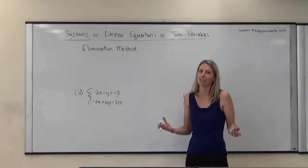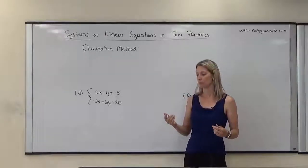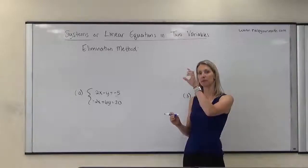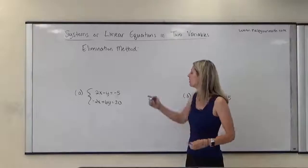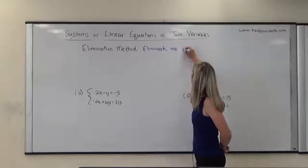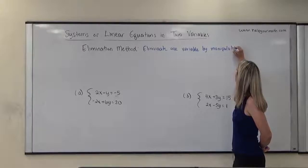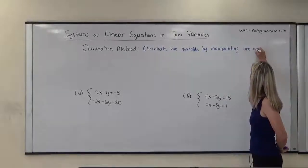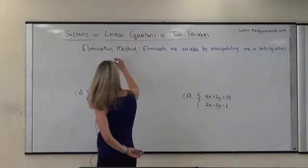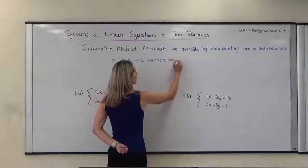For the elimination method, what we want to do is eliminate one of the variables. The way that we can do that is we ensure that the two variables have exact opposite coefficients. We use the multiplication property of equality to ensure that they have exact opposite coefficients. Then we add the equations together, and when we add two things that have opposite coefficients, they cancel each other out. We eliminate one variable by multiplying one or both equations so that one variable has exact opposite coefficients.